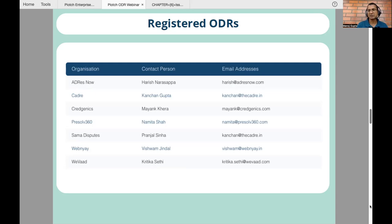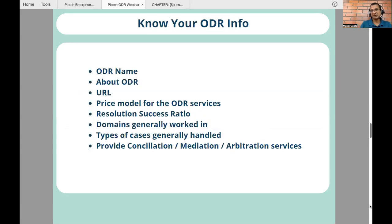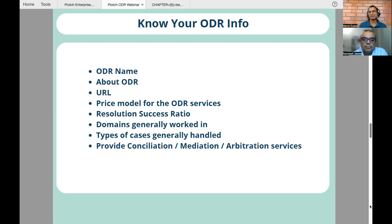Apart from CADR, there are about seven ODRs registered on ONDC as of today — you can check the ONDC website. To participate as an ODR in ONDC, you have to be a registered ODR. As an ODR, you provide your name, what you are about, your website URL, your pricing model — how you charge the buyer app or seller app — and your resolution success rate, which is published so people can see and choose. Some ODRs may be costlier but have higher resolution rates.